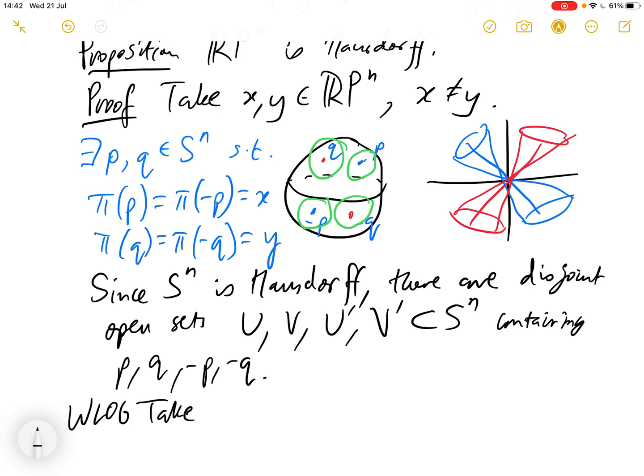without loss of generality, we can take U' and V' to be the set of minus U, such that U is in U, and minus V, such that V is in V. So then these,